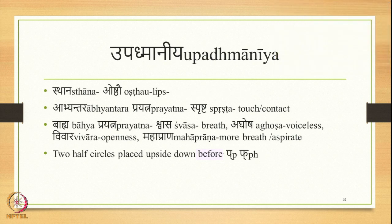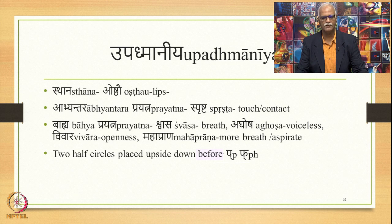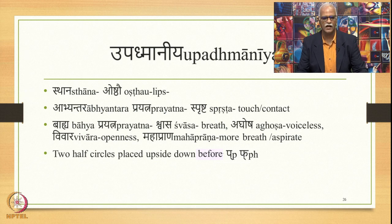The next sound in Ayogavaha is Upadmaniya. The place of articulation of Upadmaniya is Oshthau or lips. The Abhyantara Prayatna is Sprashta — touch or contact. The Bhaiha Prayatna is Shvasa (breath), Aghosha (voiceless), Vivara (openness). This is also Mahaprana, requiring more breath — also an aspirate sound. Two half circles placed upside down before P and Ph are the Upadmaniya sound representations.